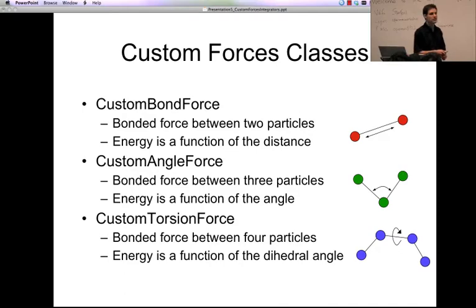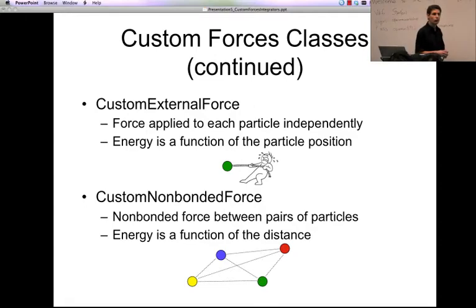Very similar, custom angle force is the angle formed by three particles. We assume that the energy of each angle is a function of what that angle is. Custom torsion force does the same thing but for four particles, and the energy is a function of the dihedral angle formed by those four particles. Custom external force—I like to think of this as just a force that's being imposed from the outside. So it's applied independently to each particle. The energy can be a function of that particle's position, but it isn't affected by the position of any other particle. So you would use this for restraining forces, boxes, things like that. In fact, we'll see some examples of it later on.